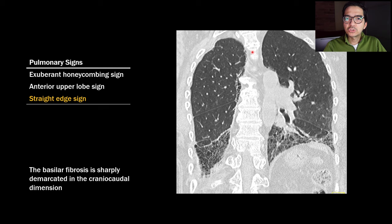The straight edge sign is seen on coronal images — you scroll posteriorly to where you see the spine, and the basilar fibrosis shows a sharp demarcation in the craniocaudal dimension. This is a positive straight edge sign. In a patient with IPF, by contrast, the edge of fibrosis is less well demarcated and tends to creep up the lateral edge of the lung rather than stop abruptly.